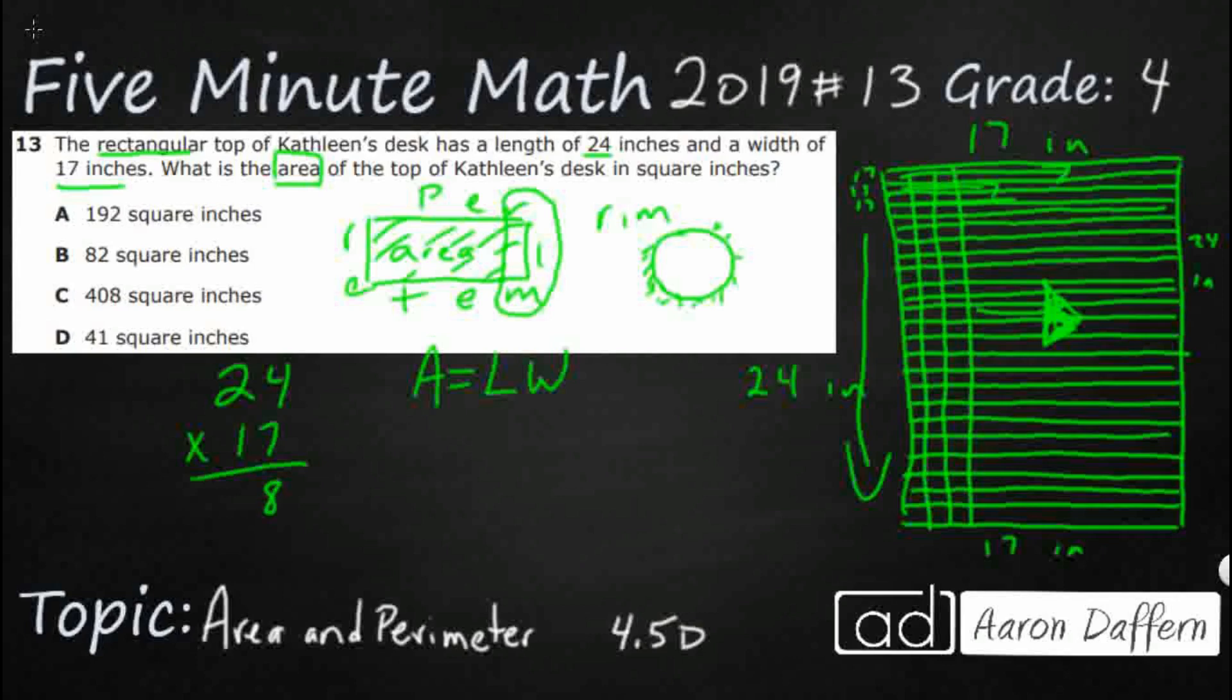So 7 times 4 is 28. 7 times 2 is 14. Add the 2 is 16. Put a zero there, because we're starting in the tens place, and you get your 24. Add it up, and there we go. We've got a 10. We've got 408.